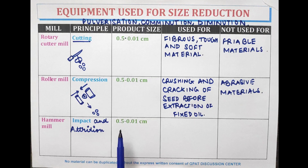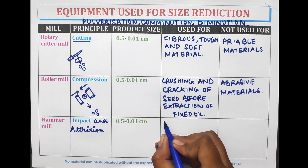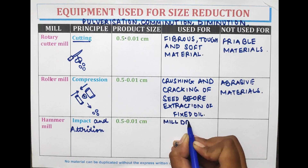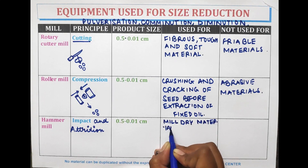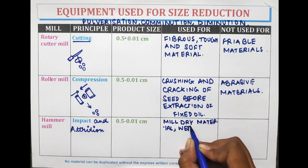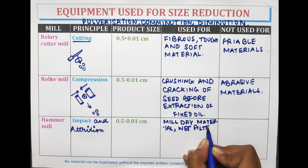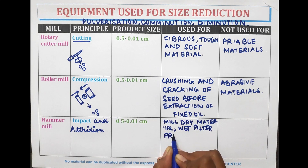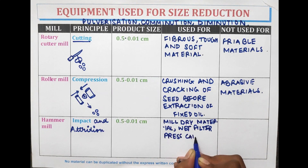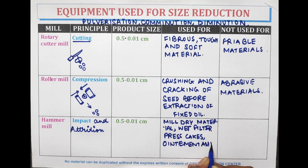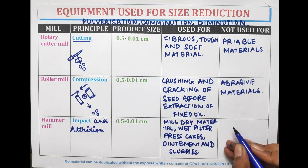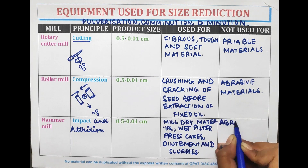The hammer mill is used to mill dry materials, wet filter press cakes, ointments, and slurries. It is also not used for abrasive materials.